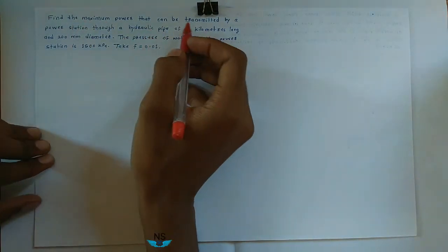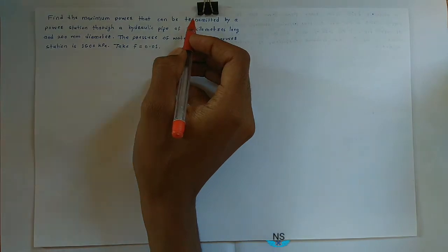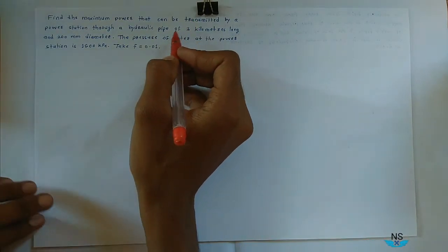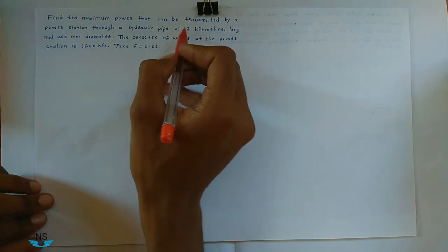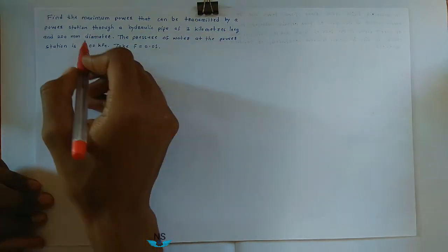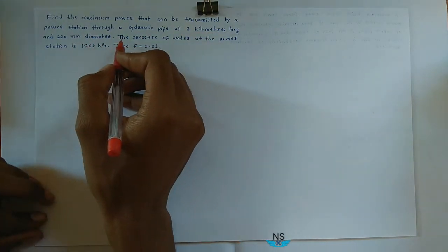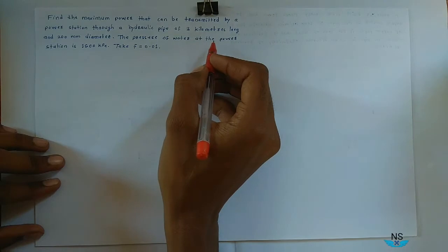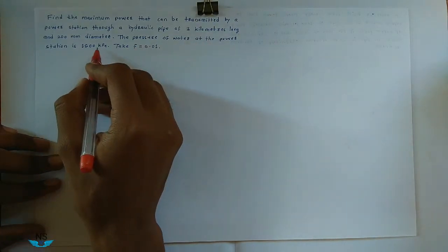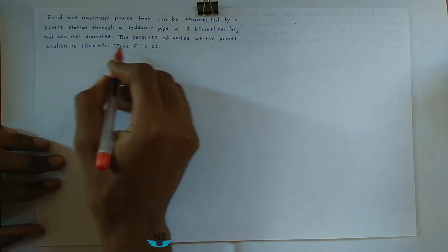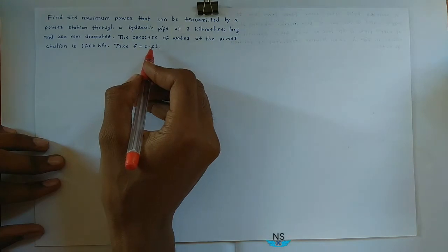Find the maximum power that can be transmitted by a power station through a hydraulic pipe of 3 km long and 200 mm diameter. The pressure of water at the power station is 1500 kPa, take f equal to 0.01.